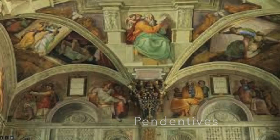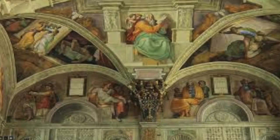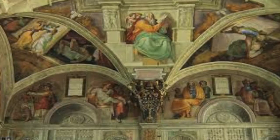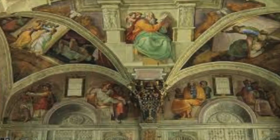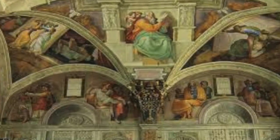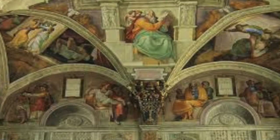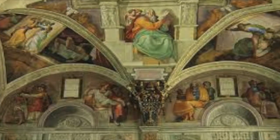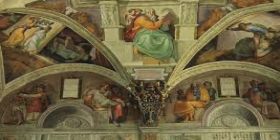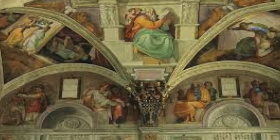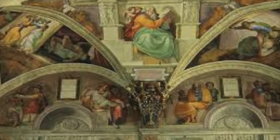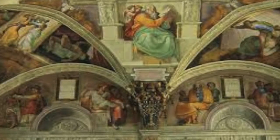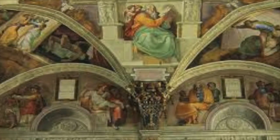There are four pendentives on the corners of the ceiling. They include scenes from Judith and Holofernes, David and Goliath, the punishment of Haman, and the brazen serpent. They are seen as junction points between the stories of the ceiling and those of the walls.